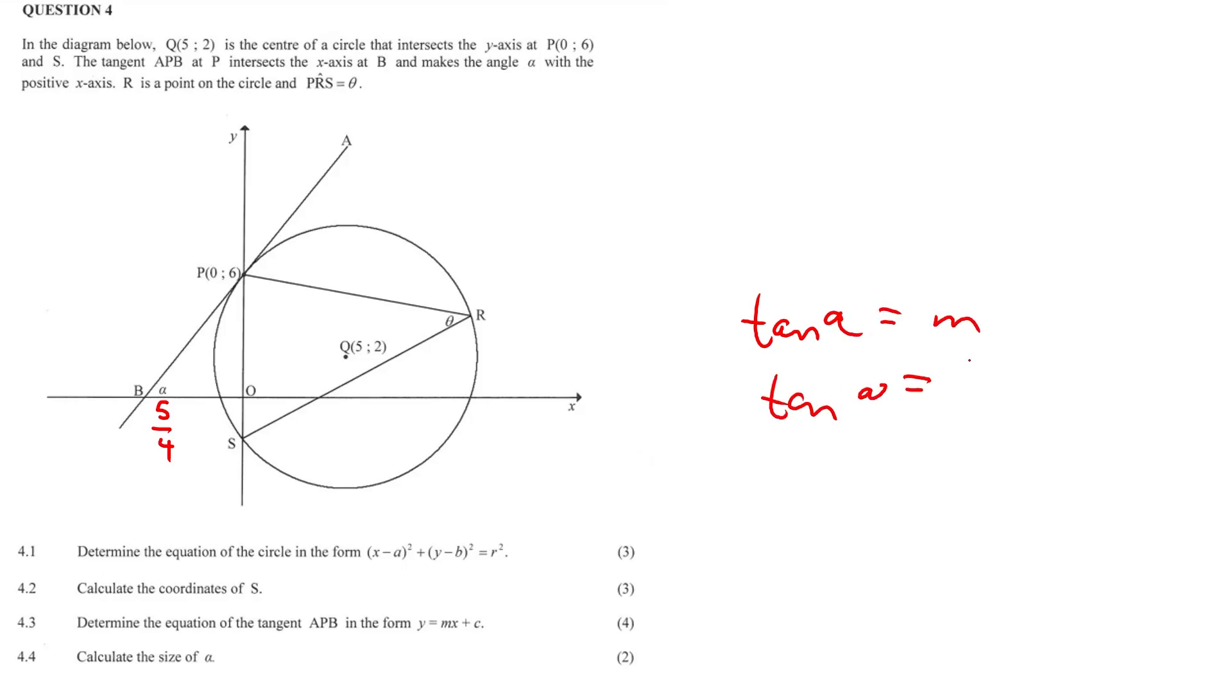Tan alpha is equal to M. We want to calculate alpha, and 5 over 4 is what we just calculated. So into your calculator, shift tan 5 over 4, and alpha will be equal to 51.34. And that's it for the question. Sorry, I made a mistake there. I swapped the variables around. Sorry, that was definitely my error. And yeah, that's going to come from your formula sheet. It's usually tan theta, tan alpha, tan beta. It's completely interchangeable.